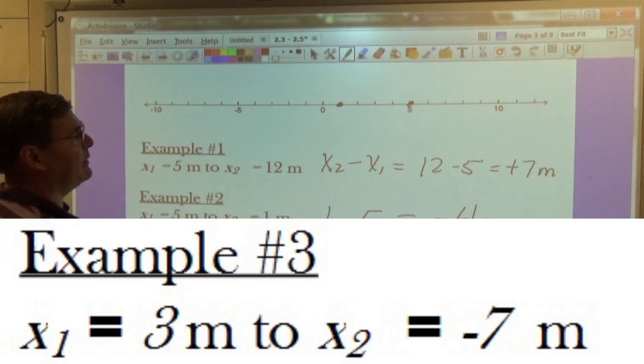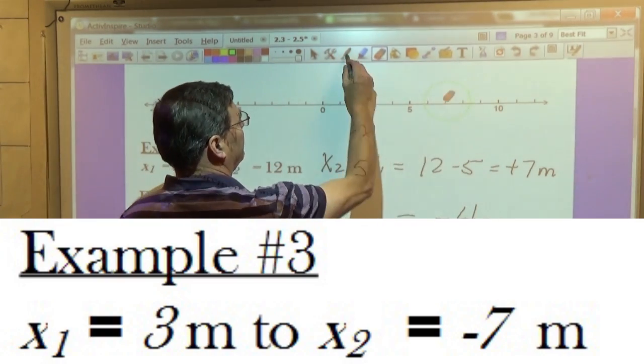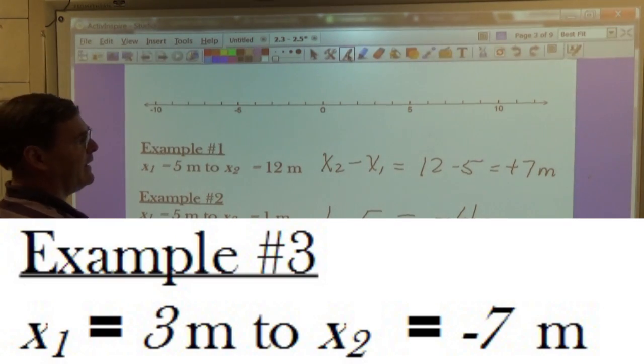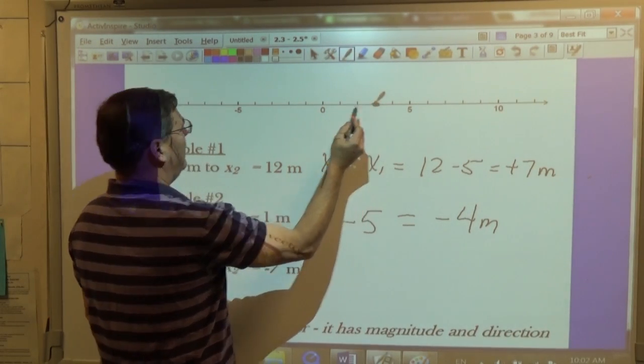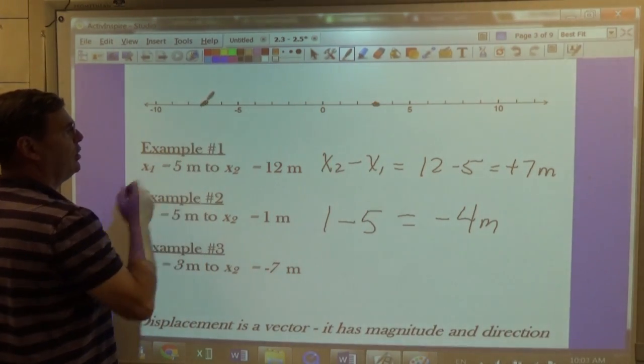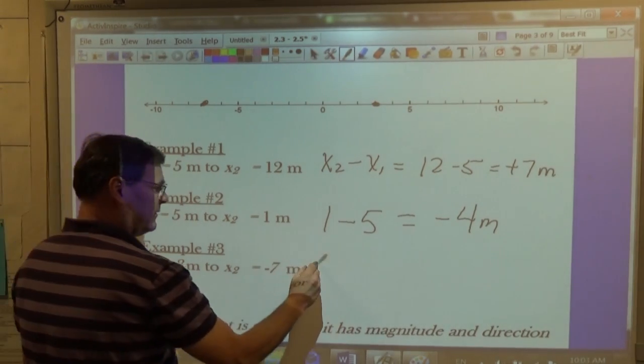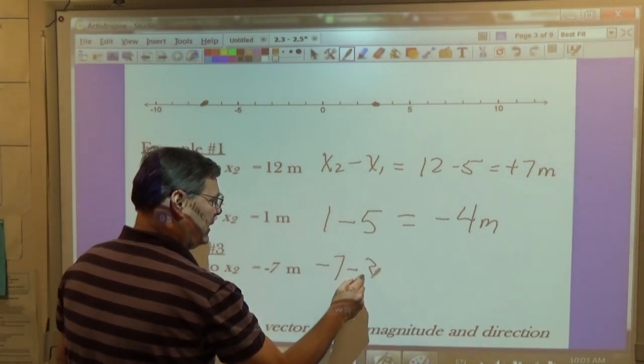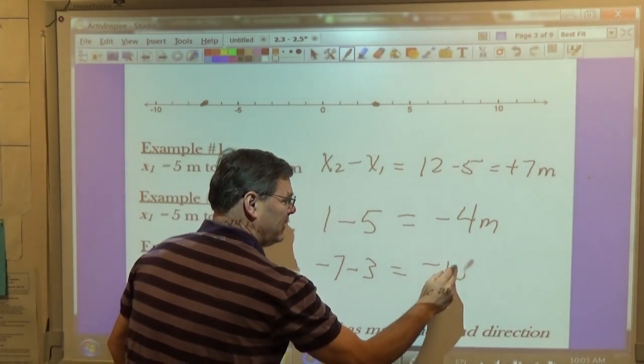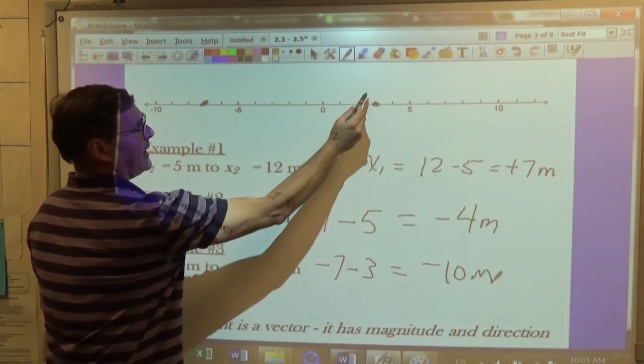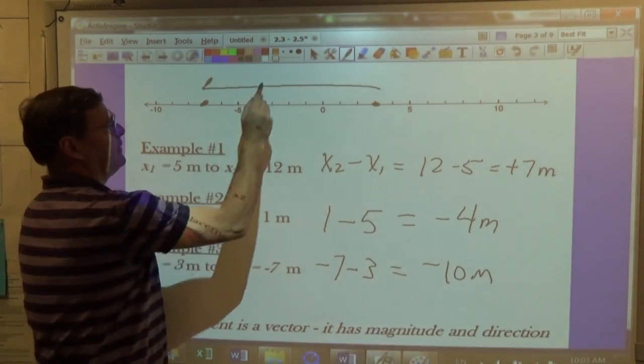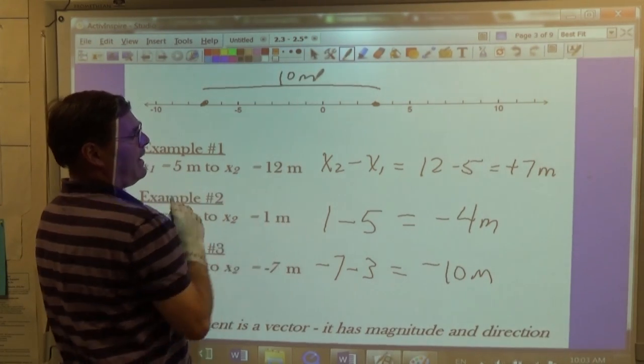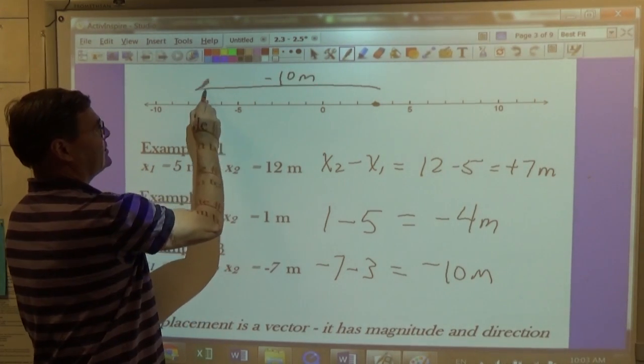And let's look at one more example here, going from 3 to negative 7. So I start off at 3, and I go to negative 7. So my displacement is negative 7 minus 3, or negative 10 meters. And you'll see that the length of that displacement is 10 meters, and it's in the negative direction.